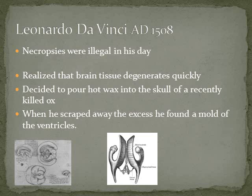So he had to perform necropsies on roadkill. He realized that brain tissue degenerated really quickly, especially something that had been dead on the side of the road for a couple of weeks. So he took matters into his own hands — he took an ox, killed it himself, cracked open its skull and poured in hot wax. Once the wax cooled, he scraped off the excess, and what was left was the shape of the ventricles of the brain, which are actually quite similar to human ventricles. Those are some of his drawings of the ventricles at the bottom of this slide.